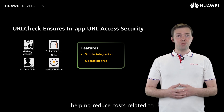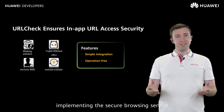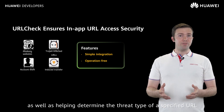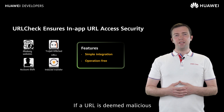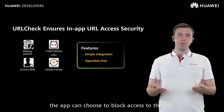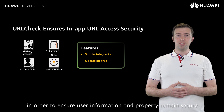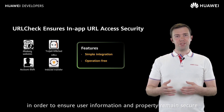URLCheck helps reduce costs related to implementing the secure browsing service, as well as helping determine the threat type of a specified URL. If a URL is deemed malicious, the app can choose to block access to the URL in order to ensure user information and property remain secure.